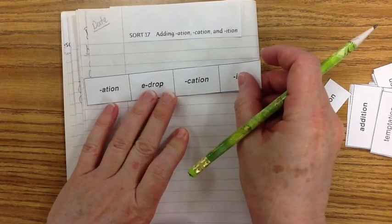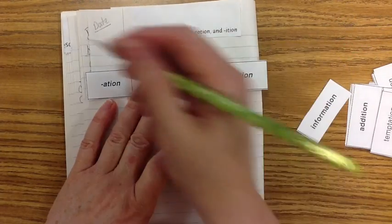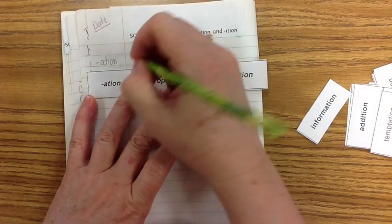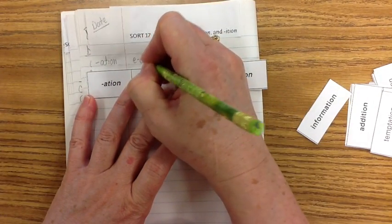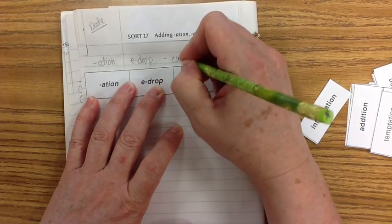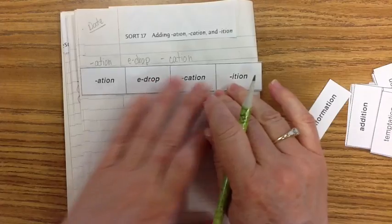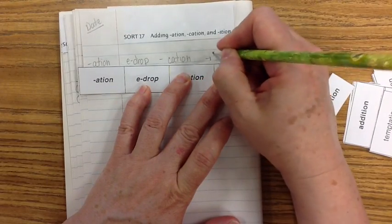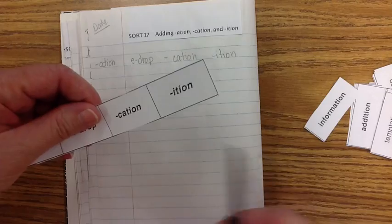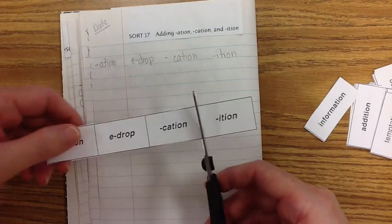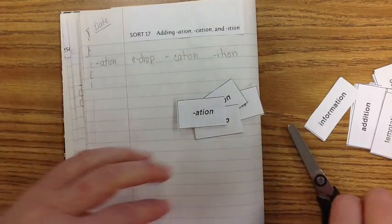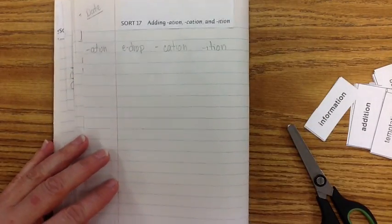They're kind of long, so start clear over on the edge of your notebook. So we have A-T-I-O-N, E-drop, C-A-T-I-O-N, and I-T-I-O-N. Let's cut those. Put those aside in your spelling notebook.